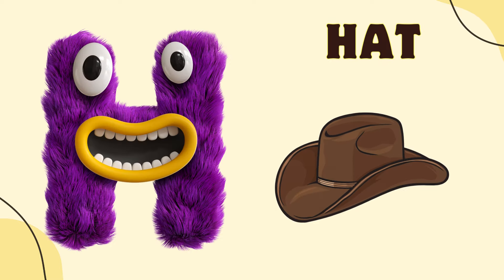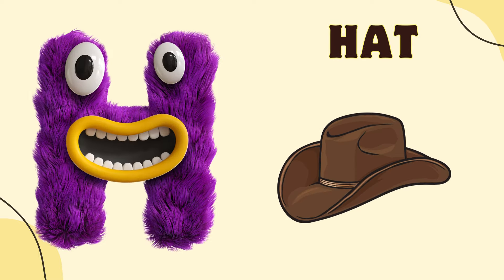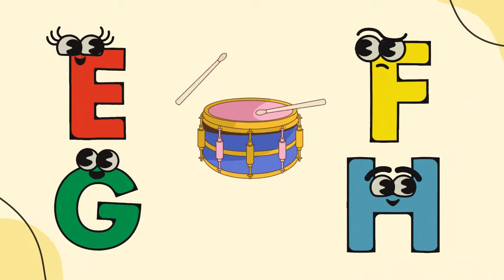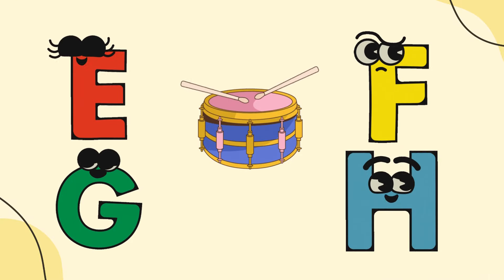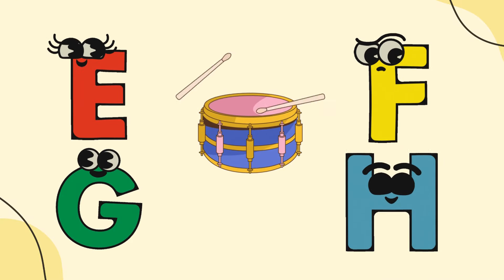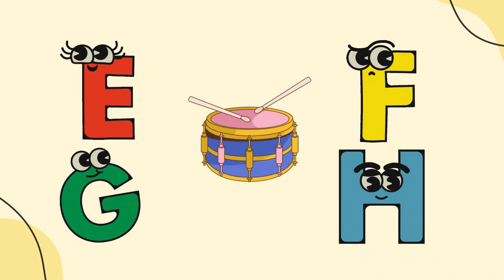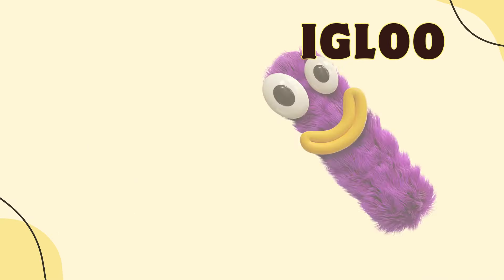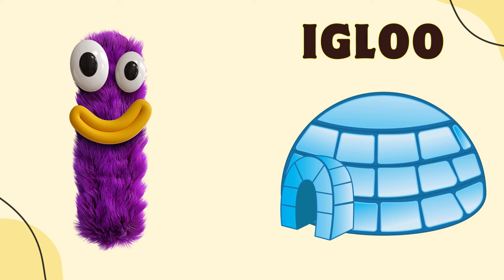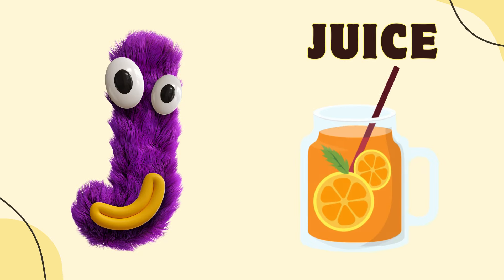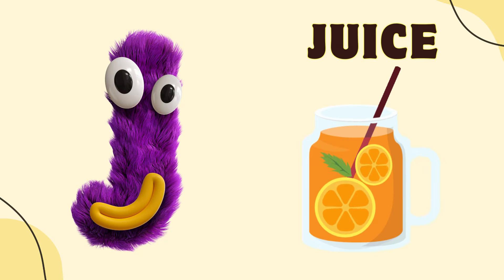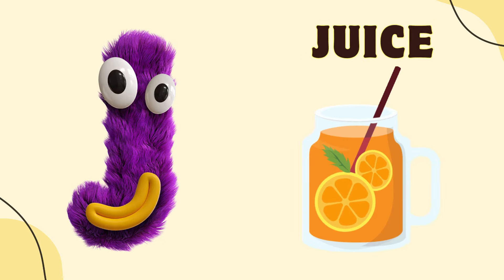H is for Hats, H-H-Hats. I is for Igloo, I-I-Igloo. J is for Juice, J-J-Juice.